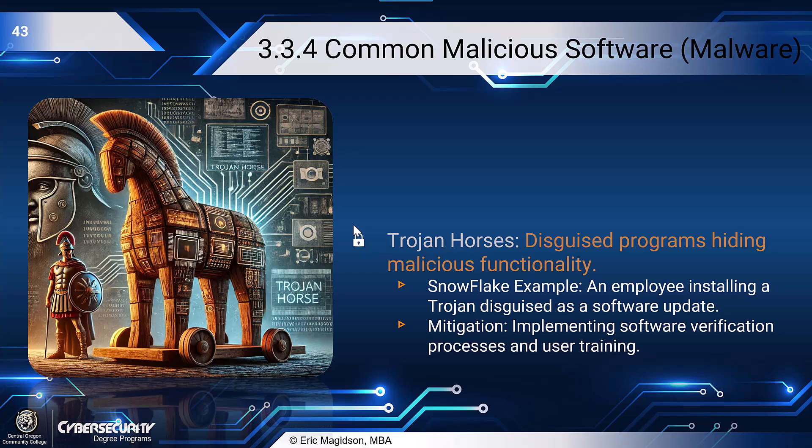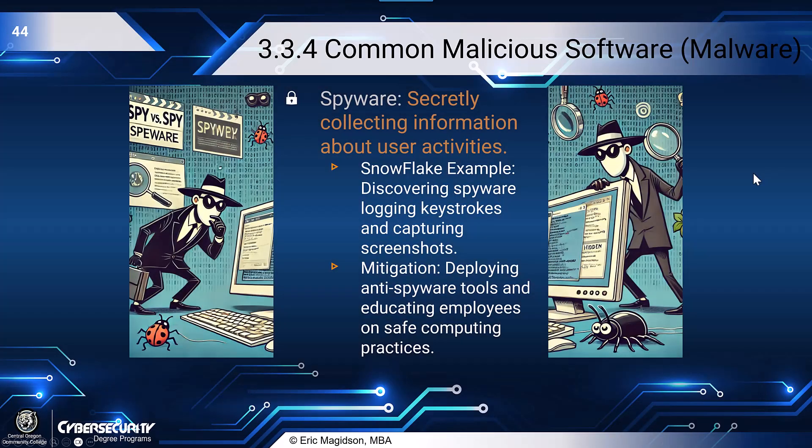A Trojan horse — taking us back to Roman days — involves disguised programs hiding malicious functionality. We exploit a zero day, create malicious software, inject it in, and potentially establish a backdoor. In Snowflake's example, an employee installs a Trojan disguised as a software update. Mitigation includes implementing software verification processes and user training.